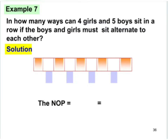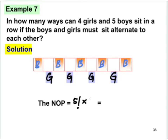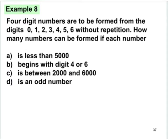Let's continue with example seven. In how many ways can four girls and five boys sit in a row if the boys and girls must sit alternating? So we have five boys, and the girls sit alternately between them. The number of arrangements is five factorial for the boys, and then four factorial for the girls. The answer is 2880 ways.